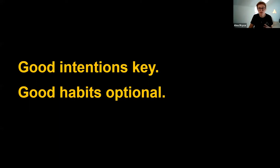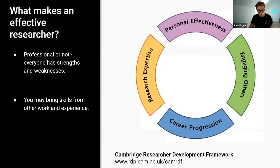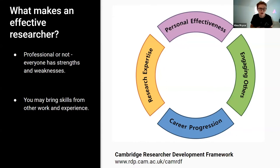I'm going to introduce you to some of the things that are important in being a researcher as a new way of thinking about what you've been doing. This is called the Cambridge Researcher Development Framework — it's a wheel with about 15 different qualities that the University of Cambridge has decided are important for professional researchers' career development. Most of us here aren't professional researchers, so this won't be completely relevant. However, professional or not, everyone has strengths and weaknesses, preferences and dislikes. Many of us are bringing different skills from our personal lives that are actually transferable — we just may not realize it.